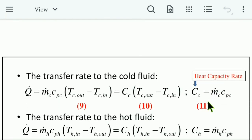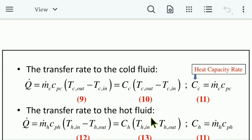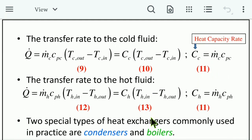The heat transfer rate to the cold fluid is: Q̇ = ṁ_c · C_pc · (T_c,out − T_c,in) = C_c · (T_c,out − T_c,in), where C is the heat capacity rate, defined as ṁ_c · C_pc. For the hot fluid: Q̇ = ṁ_h · C_ph · (T_h,in − T_h,out) = C_h · (T_h,in − T_h,out), where C_h = ṁ_h · C_ph.